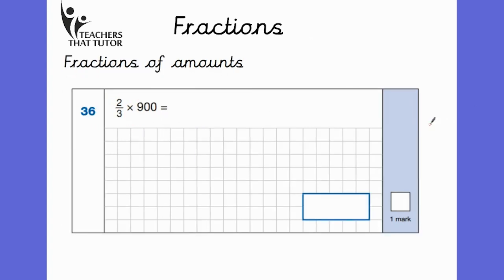The next question is for fractions of amounts. Now, I say that because we've got two thirds times 900. A lot of children will be put off by this times sign being here. But what I tell all the children in my class is that times sign just means of. So essentially, it's asking us for two thirds of 900, which means that this is just a standard fractions of amount question. Now, the rule that I teach the children in my class is that you divide by the bottom and then you multiply by the top.